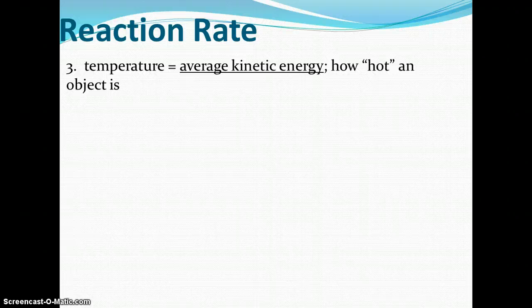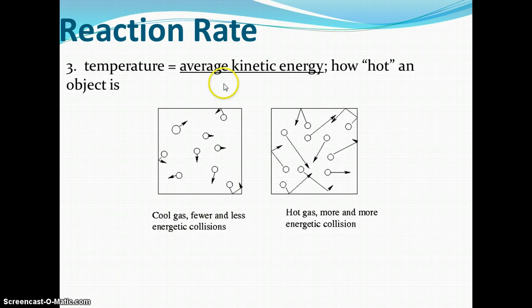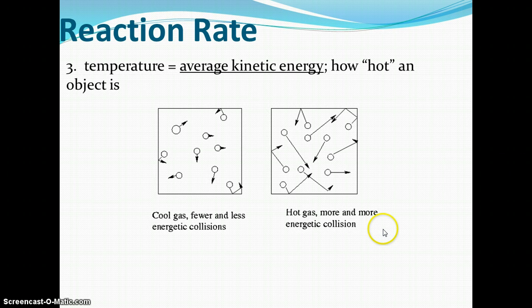Next up is temperature. Temperature is average kinetic energy, dealing with heat or how hot an object is. When the temperature increases, particles start speeding up and bouncing all over the place, which leads to more collisions and a higher reaction rate. On the left side, we have cool gas — less collisions and less energy. On the right side, we have hot gas, with particles bouncing all over the place, having more and more collisions.